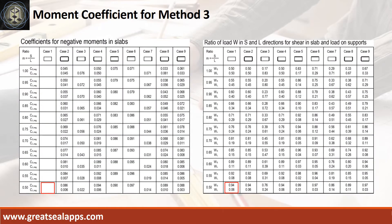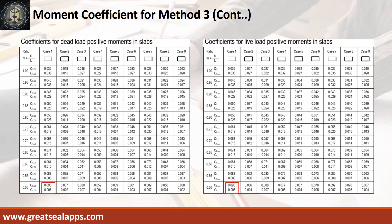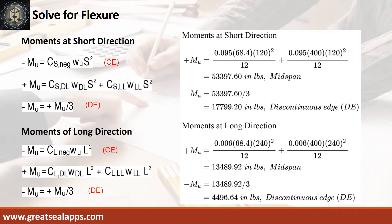Use Case 1 at m equals 0.5 to refer coefficients for negative moments and shear computations, and for dead load and live load positive moments. Moments at short direction: positive moment at mid-span is 53,397.6 inch-pounds; negative moment at discontinuous edge is 17,799.2 inch-pounds. Moments at long direction: positive moment at mid-span is 13,489.92 inch-pounds; negative moment at discontinuous edge is 4,496.64 inch-pounds.